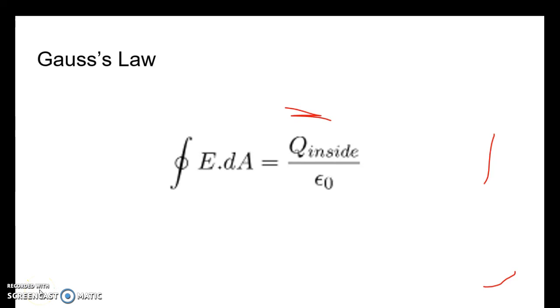This video is about Gauss's Law. Gauss's Law says that the integral of the electric field E through a closed area A is equal to the total charge inside the area, Q inside, divided by ε₀, which is the constant called the permittivity of free space and shows up all over physics.